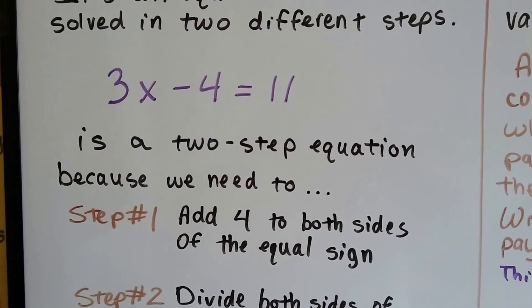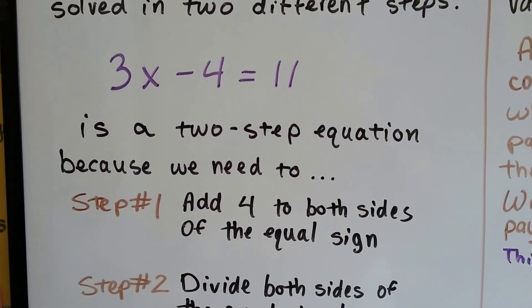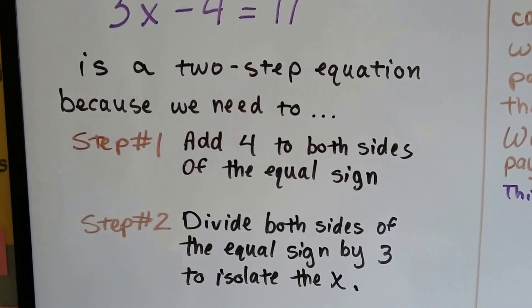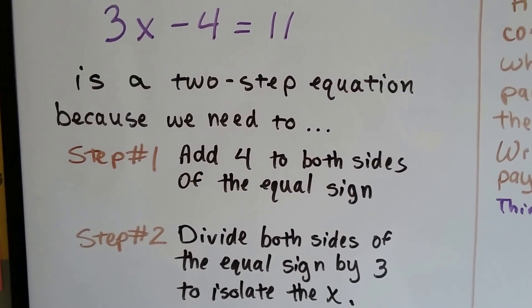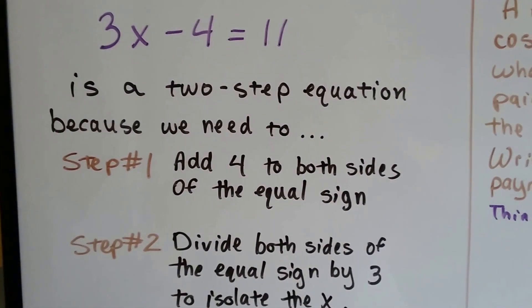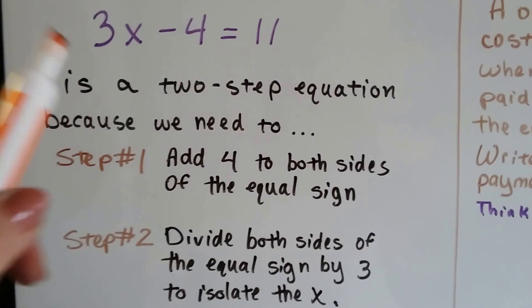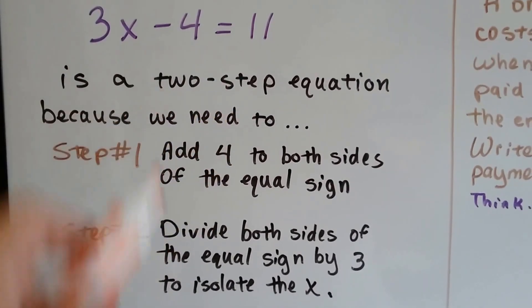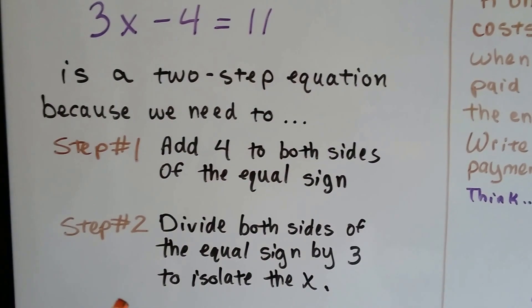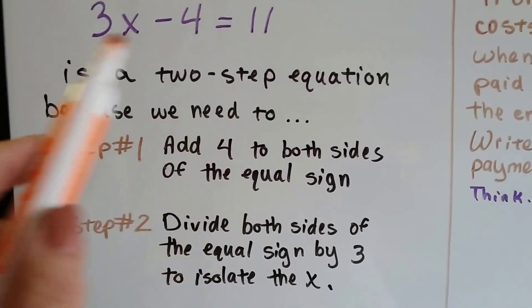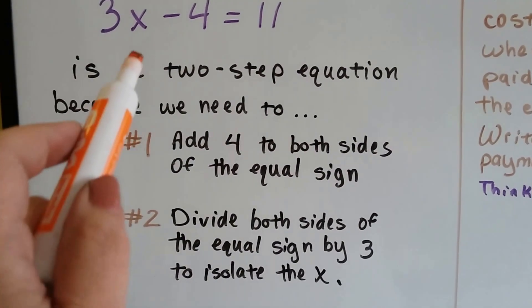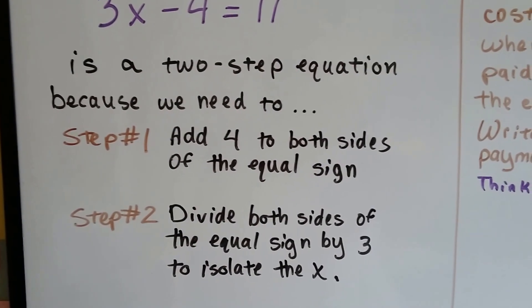If we have 3x minus 4 equals 11, it's a two-step equation because we need to do step 1: add 4 to both sides of the equal sign because it says minus 4. We're going to do the inverse operation and add 4 to each side of the equal sign. Step 2, we would divide both sides by 3 to isolate this x to get it by itself to find out what it equals.